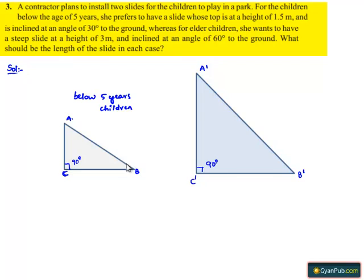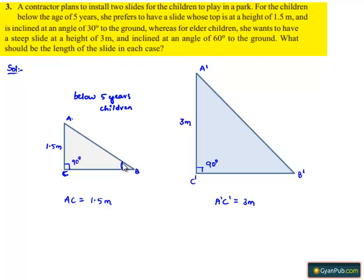The vertical height of the slide for children below age 5 years is given as 1.5 meters, that is AC = 1.5 meters. For the elder children, the height is given as 3 meters, therefore A'C' = 3 meters. The angle of inclination for children below 5 years is 30 degrees, and for the elder children it is given as 60 degrees, therefore angle A'B'C' = 60 degrees.